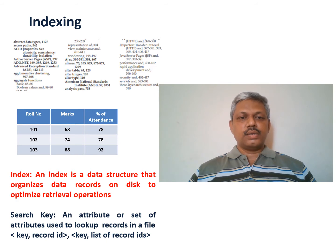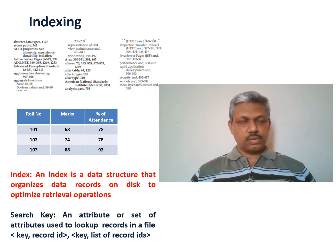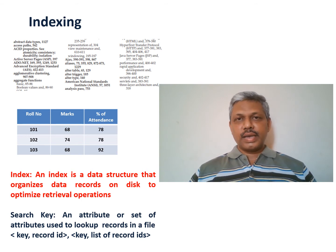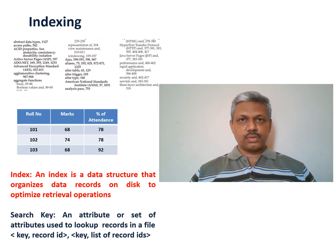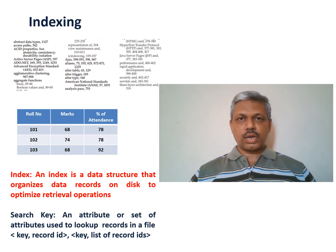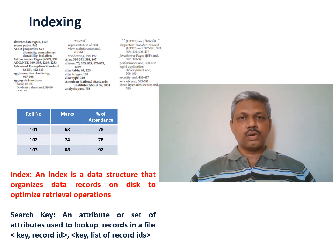More formally, an index can be thought of as a data structure that stores the information regarding the record and where it is actually present — the memory address where it is actually present. A search key is the value of the attribute or set of attributes used to look up records. The index can be stored in the form of a key together with the record ID, or key together with a list of record IDs, just as in the example of the textbook where the keyword is stored along with the page numbers.